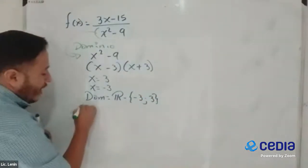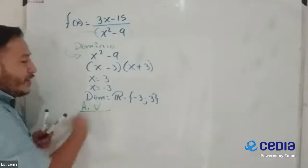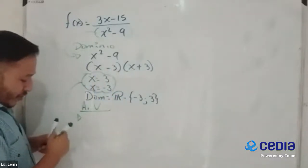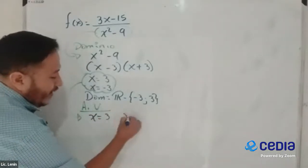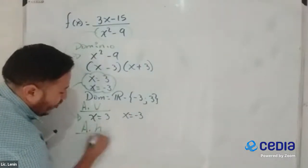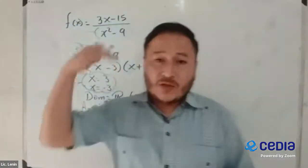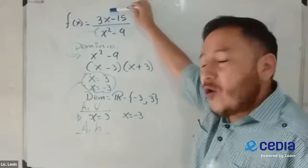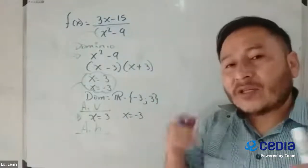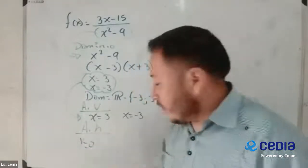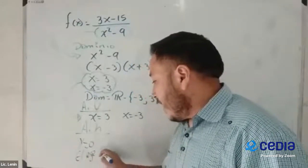En la asíntota vertical, ¿cuál es la asíntota vertical? Lo que despejamos hace un momento para encontrar el dominio. Entonces, mi asíntota vertical es x es igual a 3 y x es igual a menos 3. Para la asíntota horizontal, nos fijamos en el grado del numerador y del denominador. Vemos que aquí el grado del numerador es menor. Cuando el grado del numerador es menor, decimos que la asíntota horizontal es y es igual a cero, o el eje de las x.